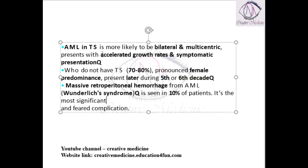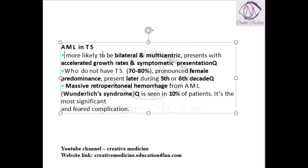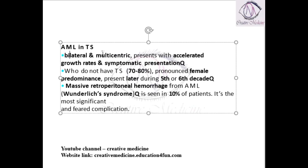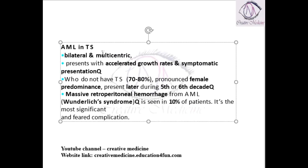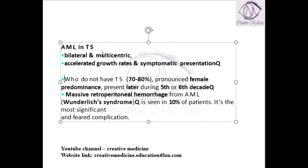Angiomyolipoma in tuberous sclerosis has a special feature. Most of the times, angiomyolipoma in tuberous sclerosis is bilateral and multicentric, and it presents with accelerated growth and symptomatic presentation.